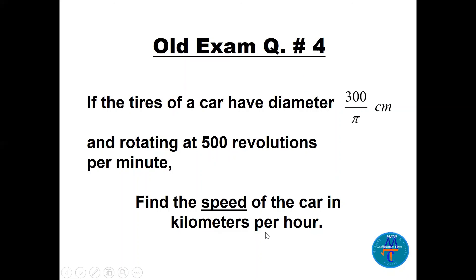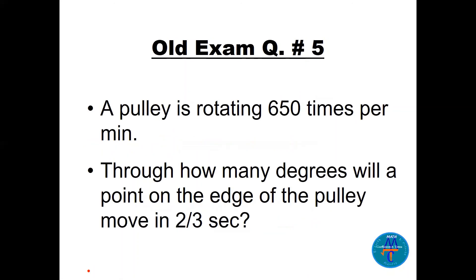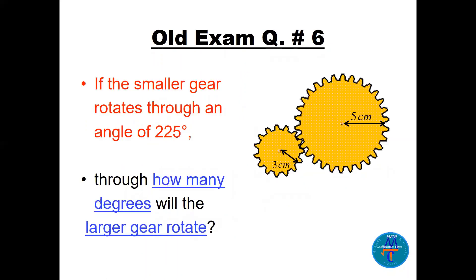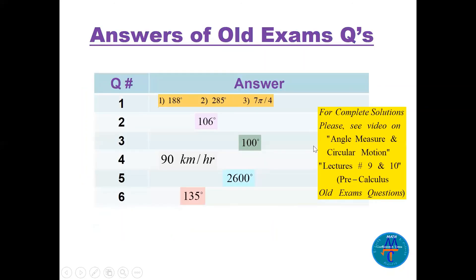If the tires of a car have diameter 300/π centimeters and rotate at 500 revolutions per minute, find the speed of the car in kilometers per hour. Also, through how many degrees will a point on the edge of a pulley move in 2/3 seconds? Another question: a smaller gear of radius 3 and a larger gear of radius 5 — if the smaller gear rotates through 225 degrees, through how many degrees will the larger gear rotate?